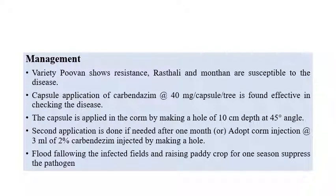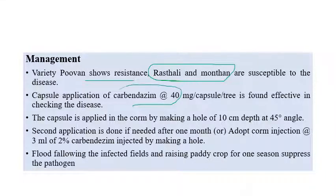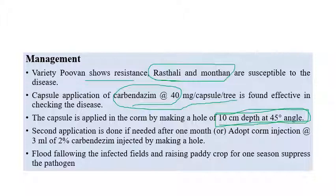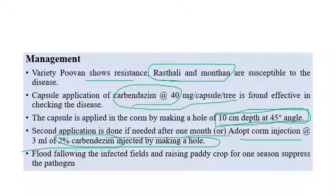For management of Panama wilt: cultivating proven resistant varieties can give some relief. Rasthali and Mundhan are susceptible varieties and should not be cultivated for some time. Carbendazim capsule application at 40 mg per capsule per tree is recommended. The capsule is applied as a stem injection at 10 cm depth at a 45-degree angle; a second application can be given a month later. Two percent carbendazim at 3 ml can be injected. Roguing of infected plants and raising paddy as a crop rotation can also suppress the pathogen.